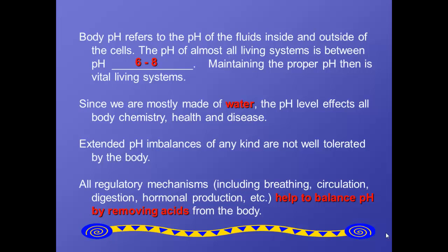Now we know that living systems prefer to keep their pH between about 6 and 8. Because we're mostly made of water as living things, the pH level—how acidic or how basic we are—is going to affect all the reactions that happen in our body, and thus it's going to affect our health.